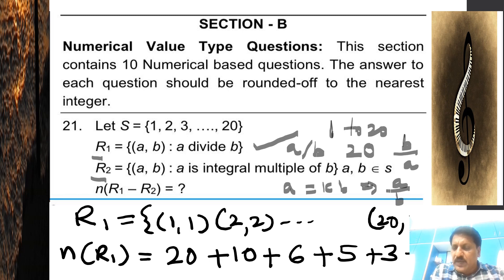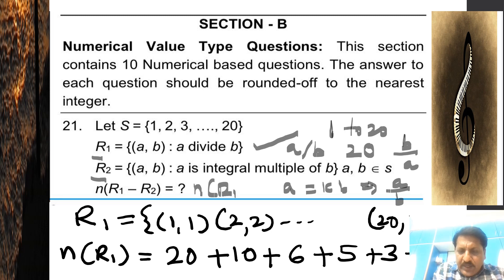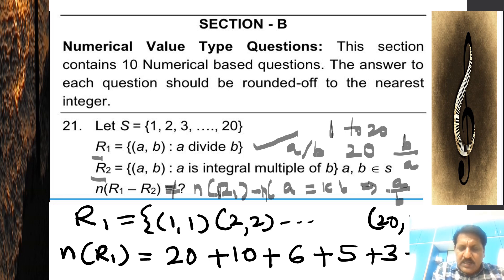So in R1, b is divisible by a, and in R2, a is divisible by b. The question asks for the number of elements in R1 minus R2, that is n(R1 − R2). Many students directly take n(R1) − n(R2), but that is a fundamental mistake — n(R1 − R2) is not equal to n(R1) − n(R2).